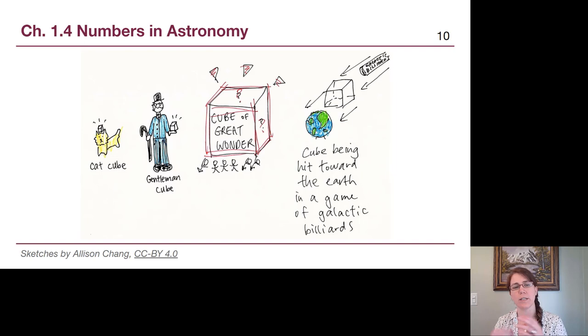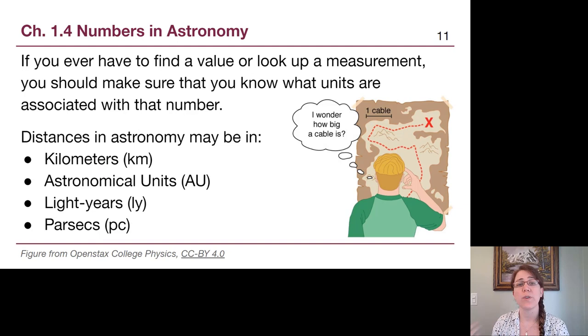A cat cube, and so maybe it's eight centimeters on each side. Maybe a gentleman cube, and it's eight inches on each side, and it's kind of big to hold in one hand. Maybe it's a cube of great wonder, and it's eight yards in all direction, and we're bowing down to it. Or maybe it's a cube being hit towards the Earth in a game of galactic billiards, and that unit is much larger than the ones that we use every day. Any of these would have been valid because those units were missing. So something to consider about how the importance of units plays a role.